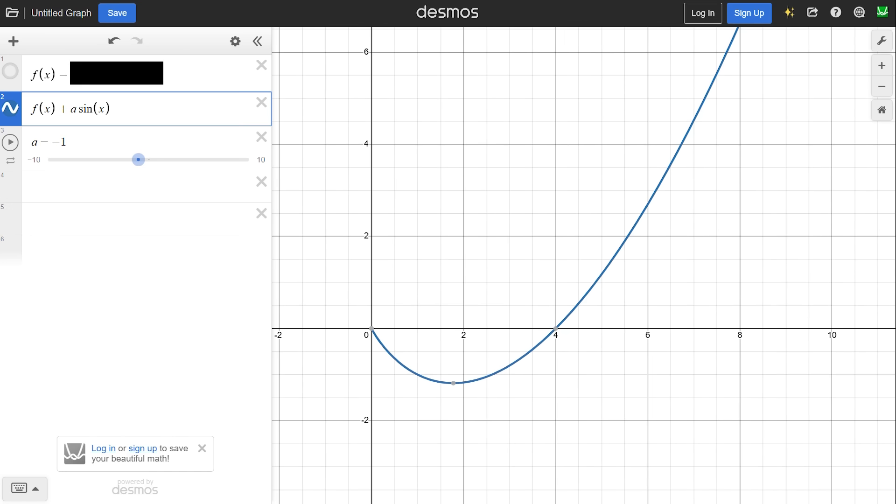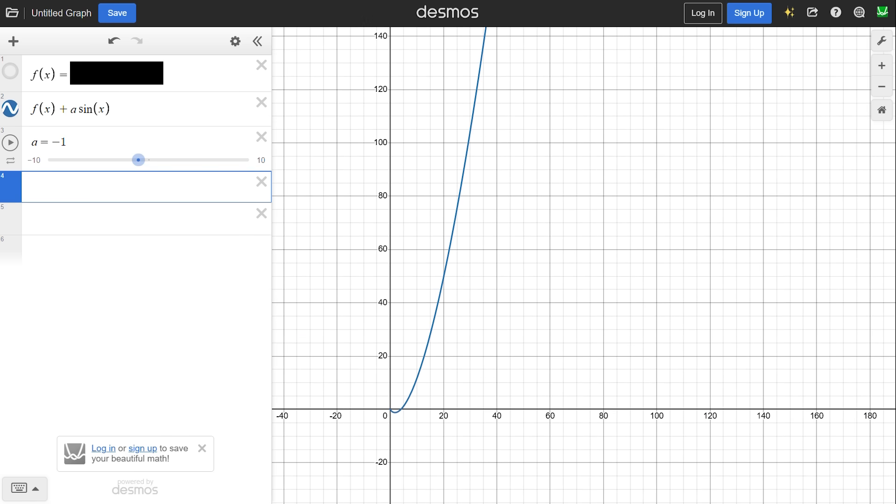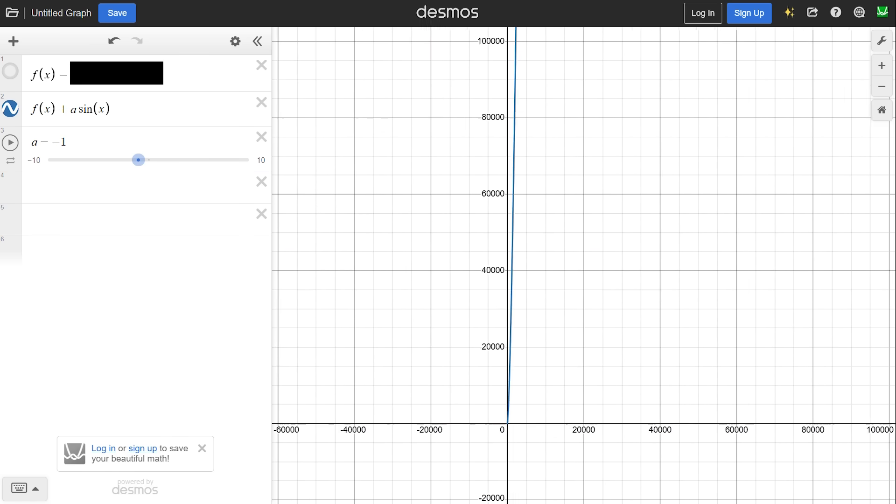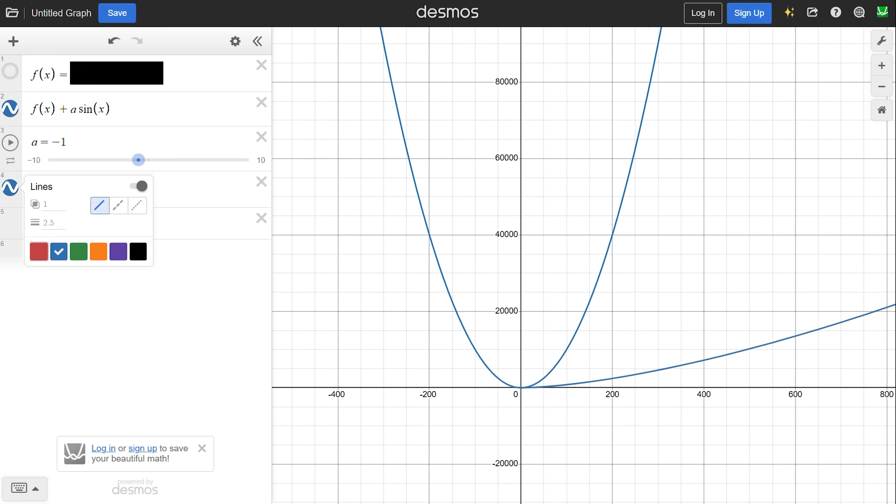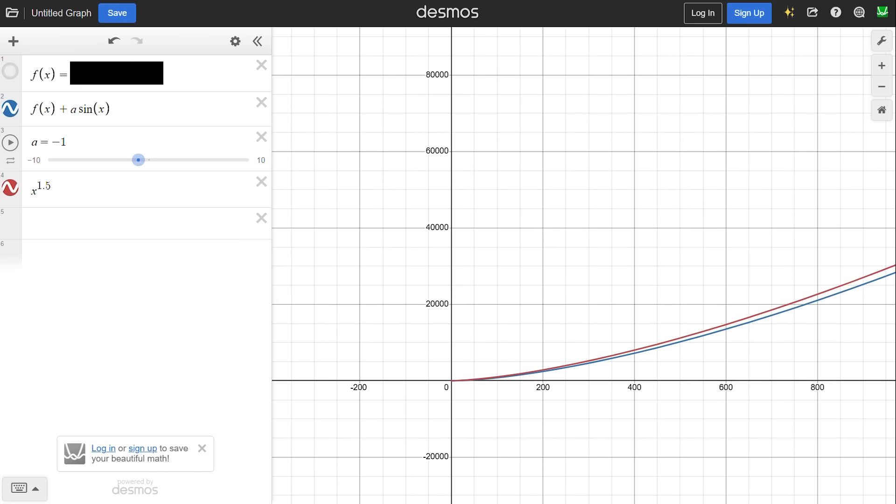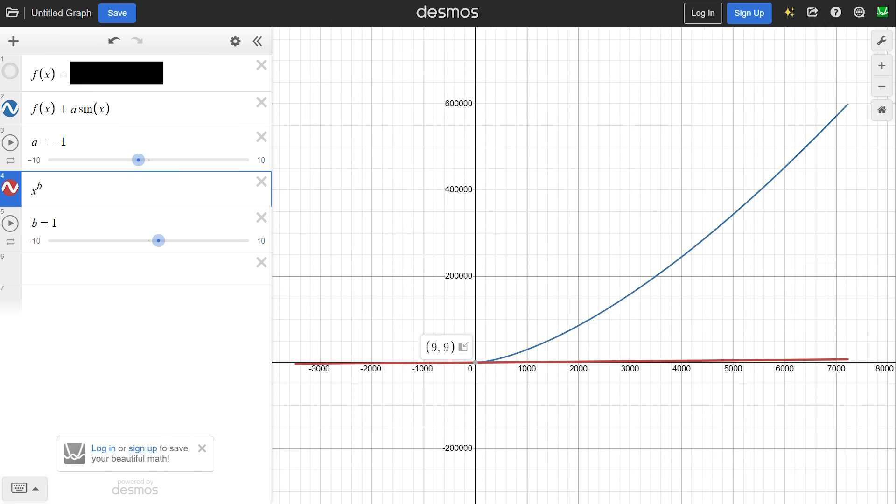We recognize that there is a minimum at x equals 16 over 9, which might be useful. Or it might not. Let's explore what the function does as x approaches infinity. It looks kind of like half a quadratic, but it seems like this function doesn't grow as fast as quadratics. So maybe it's something like x to the power of 1.5 instead of x to the power of 2. Let's make another slider to find out.